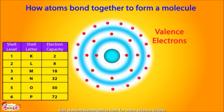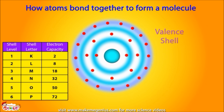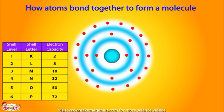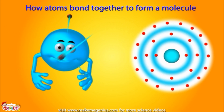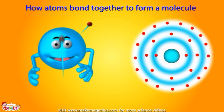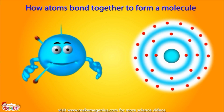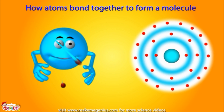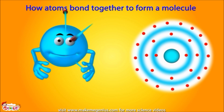The electrons in the outermost shell of an atom are called valence electrons, and the outermost shell is called the valence shell. Atoms bond with other atoms to form a molecule using these valence electrons in the valence shell.